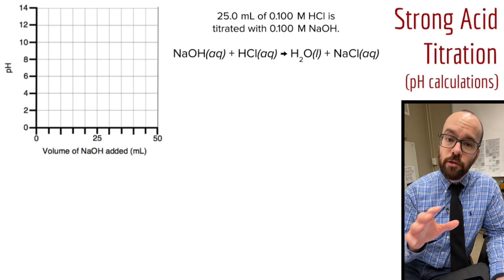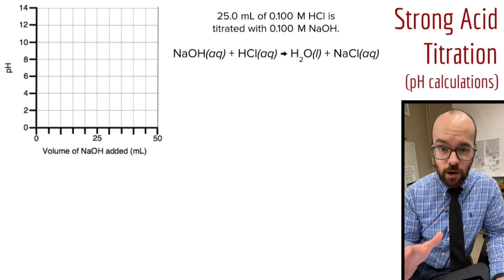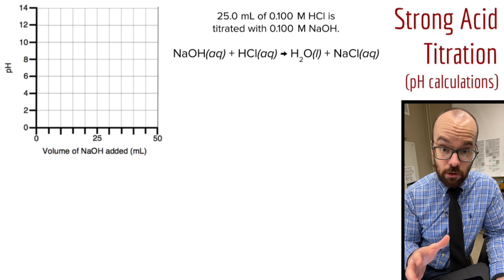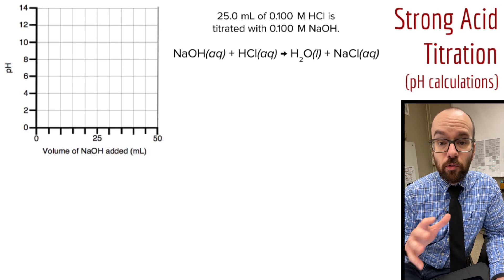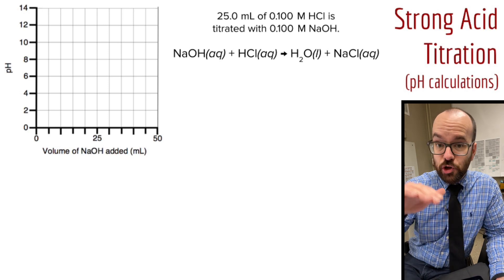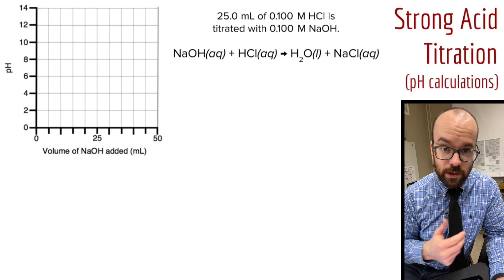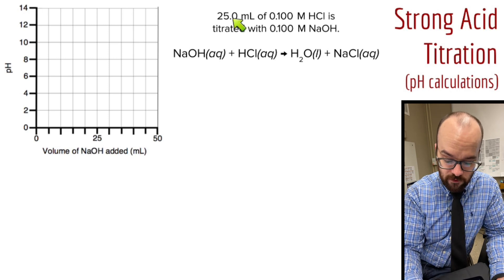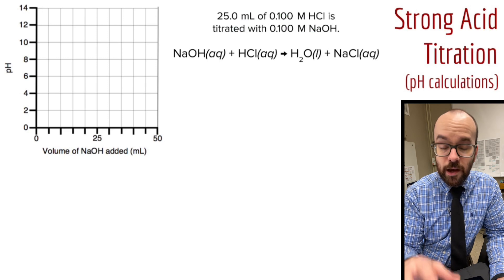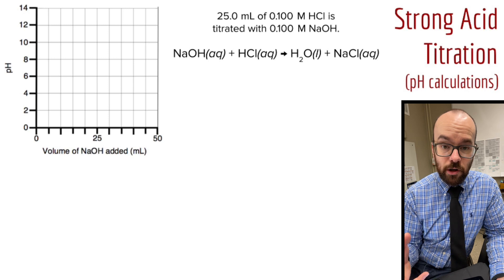Hey everyone, in this video I'm going to go through all of the parts of a strong acid, strong base titration curve and calculate the pH along the way. We'll see where that S-shape of the titration curve comes from in the context of pH calculations. Here's the setup: I've got 25 milliliters of 0.1 molar HCl and I'm titrating that with 0.1 molar sodium hydroxide.